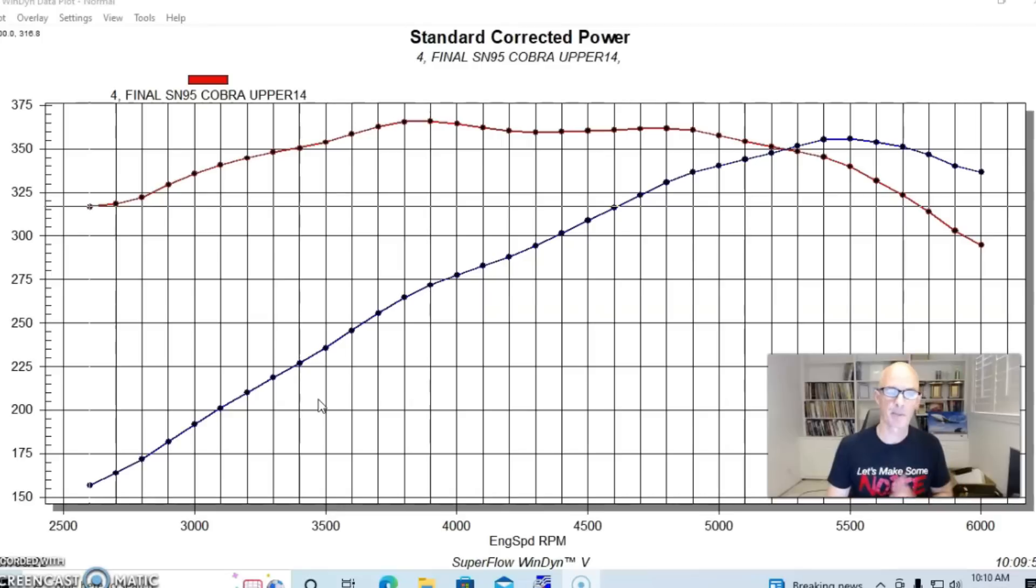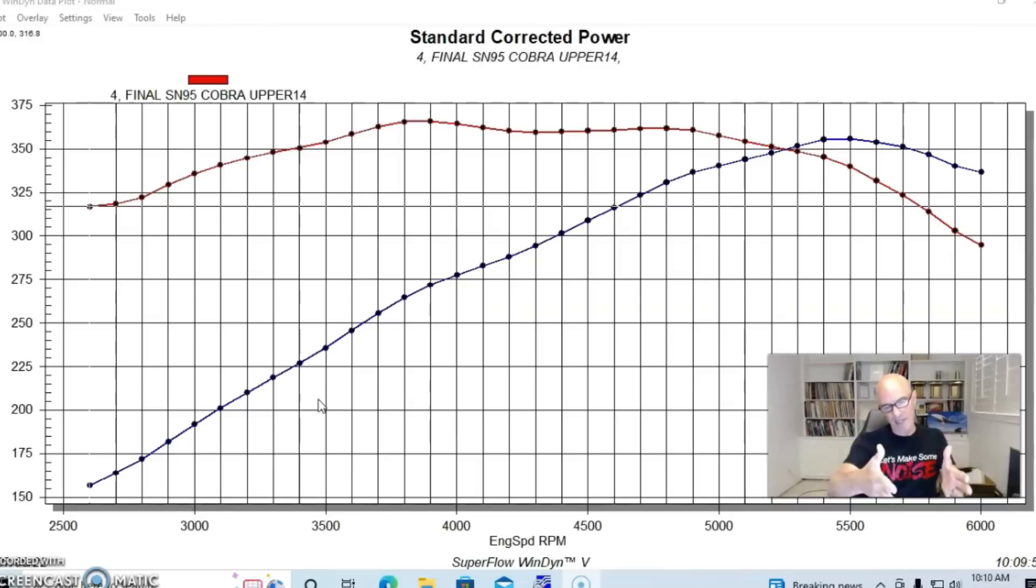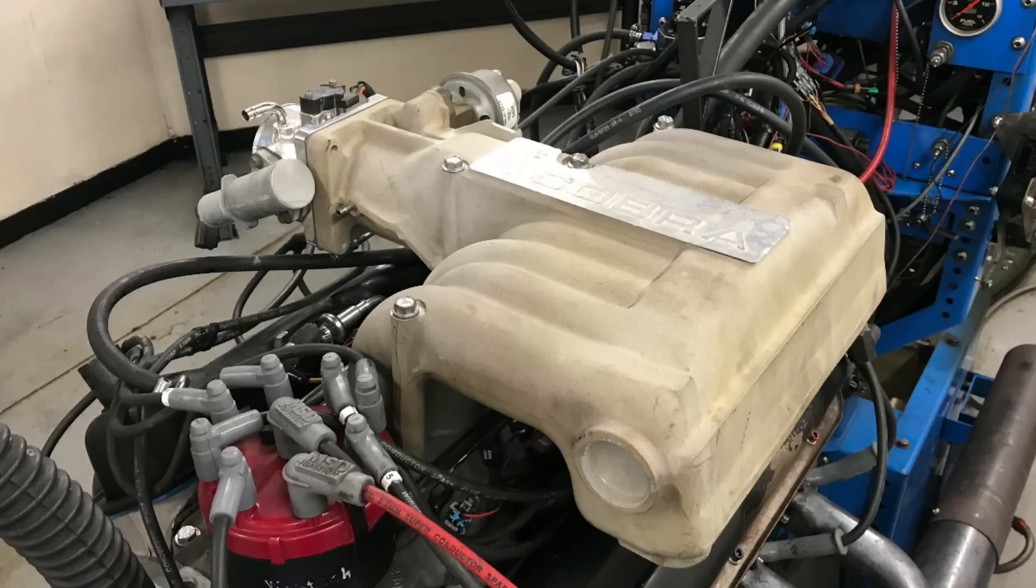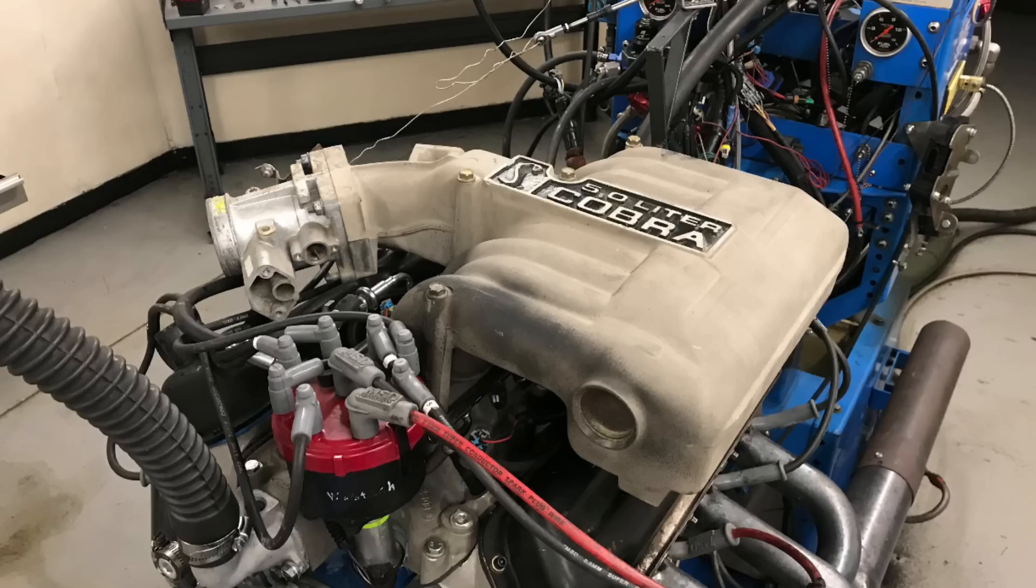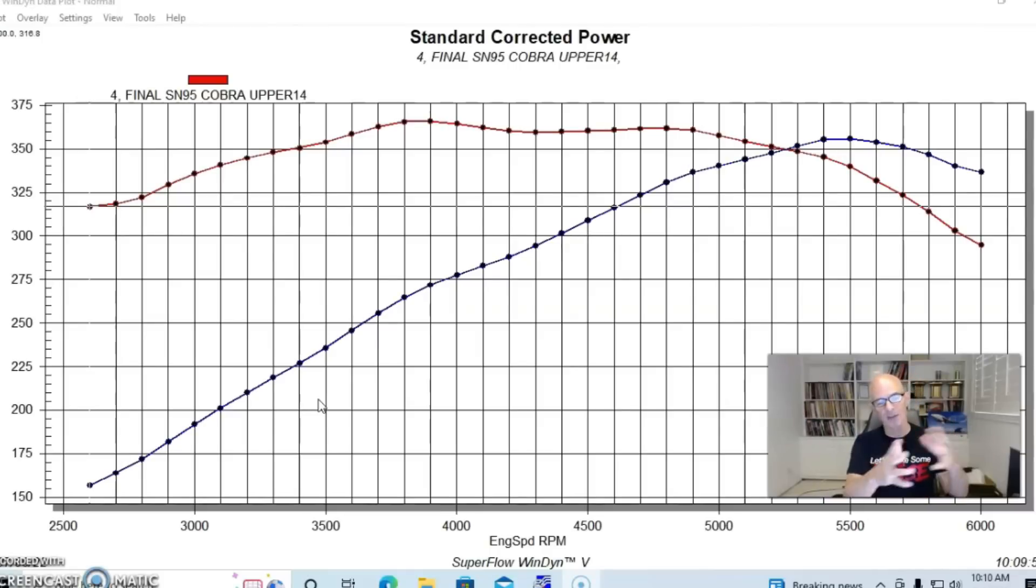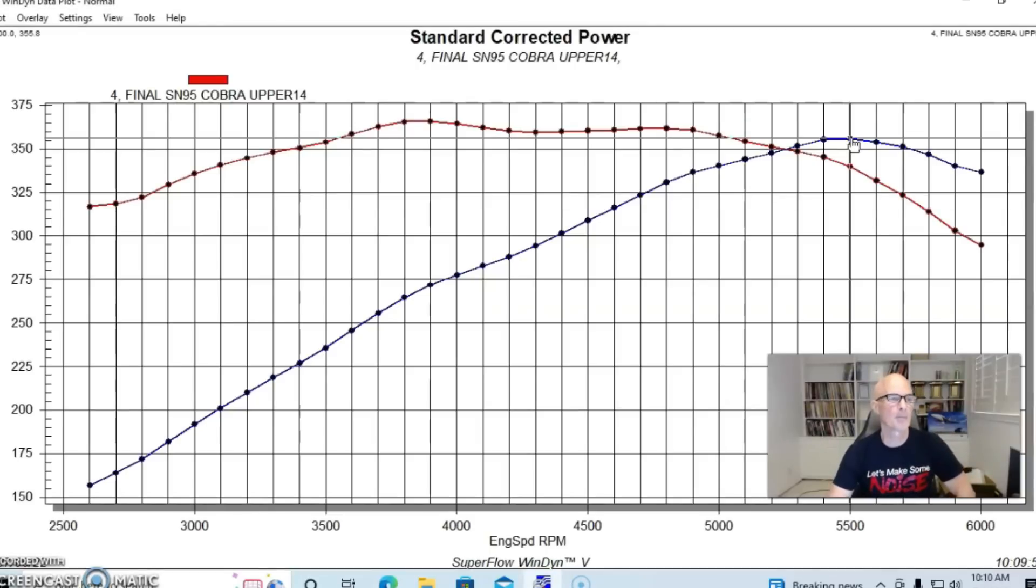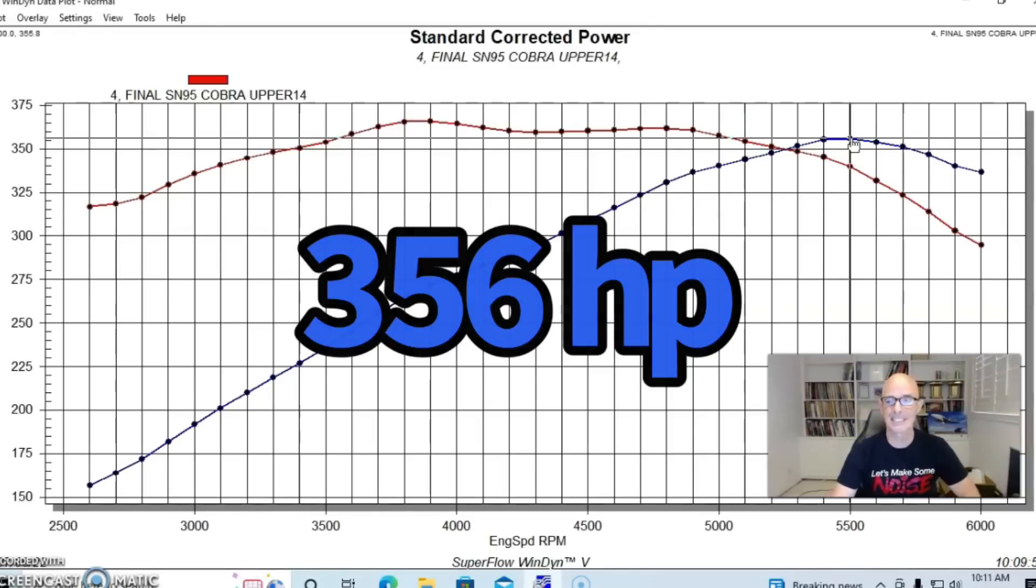So now that we're going to test all of these GT40 upper intake manifolds, we had to include the version from the SN95. A little different than the version from the previous 93 Cobra and Cobra R version. The SN95 has the little elbow kind of built in to attach the different SN95-based throttle body, not the AccuFab piece. But we ran this combination as we did all of the others and run with the SN95 version of the cast aluminum Cobra intake manifold.